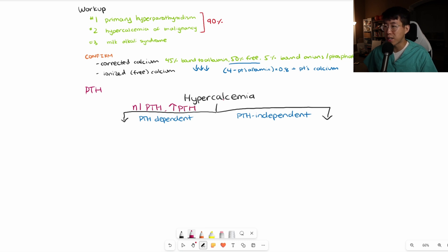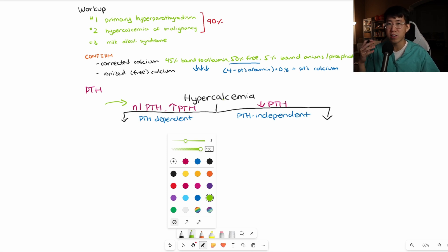The two lab results on the PTH-dependent side are a normal PTH or an elevated PTH. On the PTH-independent side, you get a low PTH. One key thing to note: if you have a normal PTH in the setting of hypercalcemia, that is actually abnormal. PTH is released to increase calcium in our blood. If we already have hypercalcemia, your PTH should be completely suppressed. The fact that you have a normal PTH level is an incorrect response from the body. This normal value is abnormal.